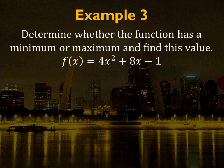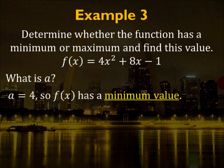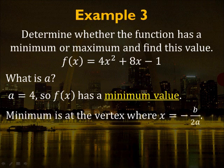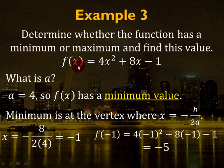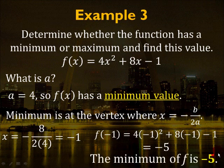Example 3: determine whether the function has a minimum or maximum, then find the value. The function has a = 4, which is positive, so f(x) has a minimum and opens upward. The vertex x-coordinate is -b/(2a) = -8/(2×4) = -1. Plugging x = -1 into the function: f(-1) = 4(-1)² + 8(-1) - 1 = 4 - 8 - 1 = -5. The vertex is (-1, -5) and the minimum value is -5.